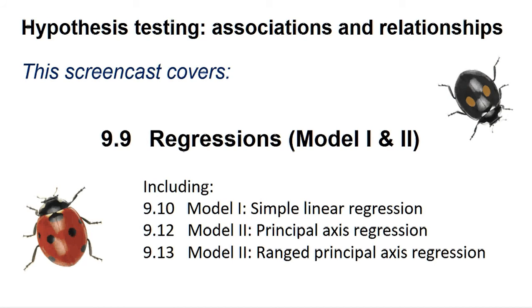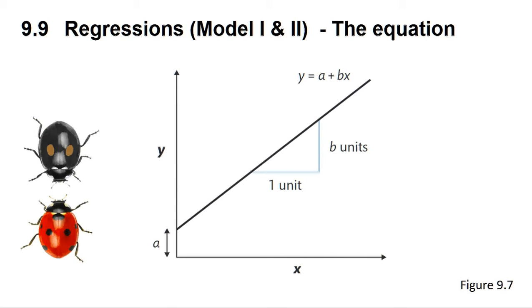Regressions are done when you have a significant correlation between two variables and wish to derive an equation that allows you to forecast the value of one variable when you know the value of the other. Regressions on their own do not tell you if there is a correlation between the variables you are modeling. See section 9.5 in the book for further information.